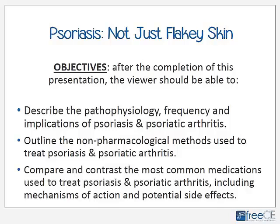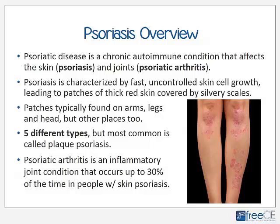The viewer should also be able to compare and contrast the most common medications used to treat psoriasis and psoriatic arthritis, including mechanisms of action and potential side effects. Psoriatic disease is a chronic autoimmune condition that affects the skin — usually referred to as psoriasis or skin psoriasis — and joints, often referred to as psoriatic arthritis, or abbreviated PA.